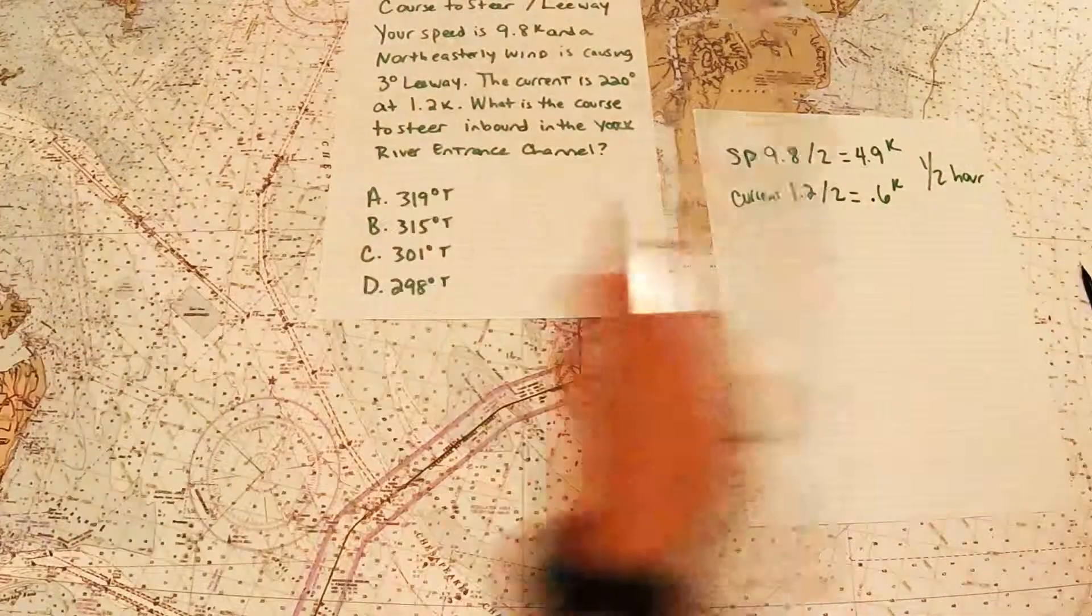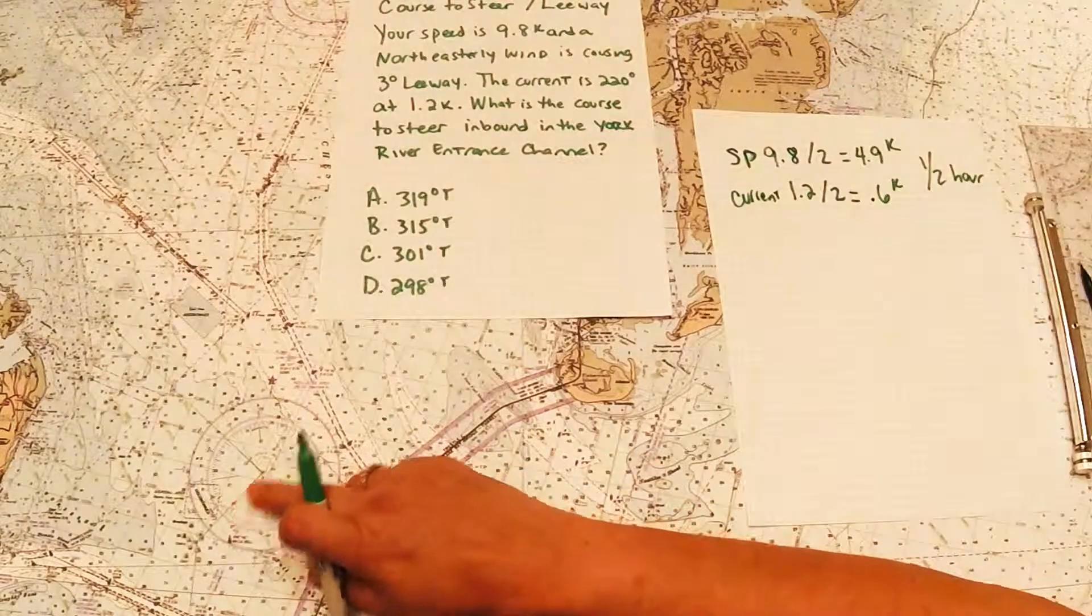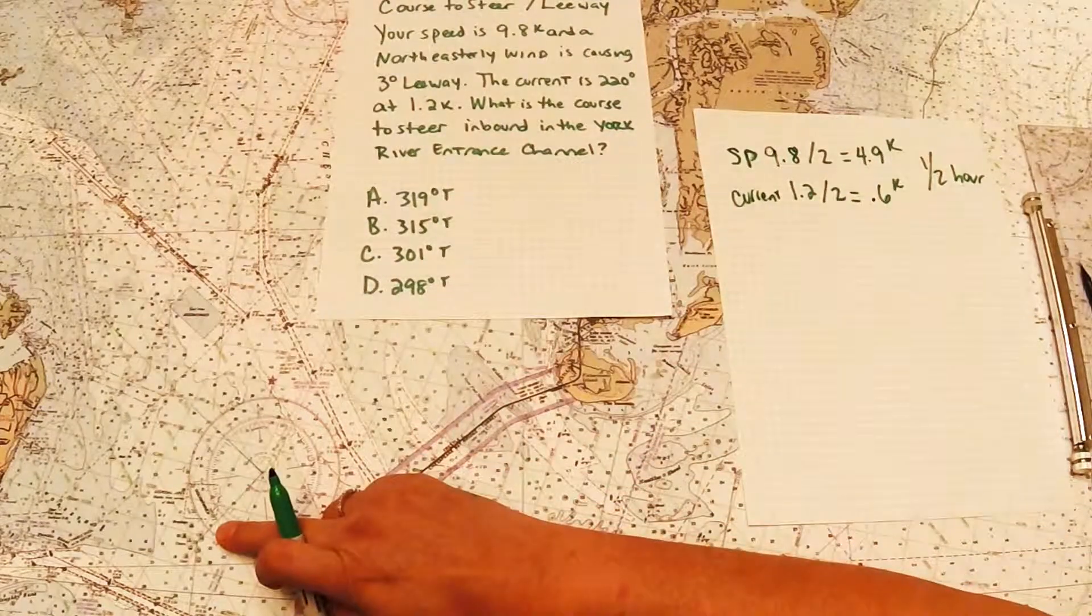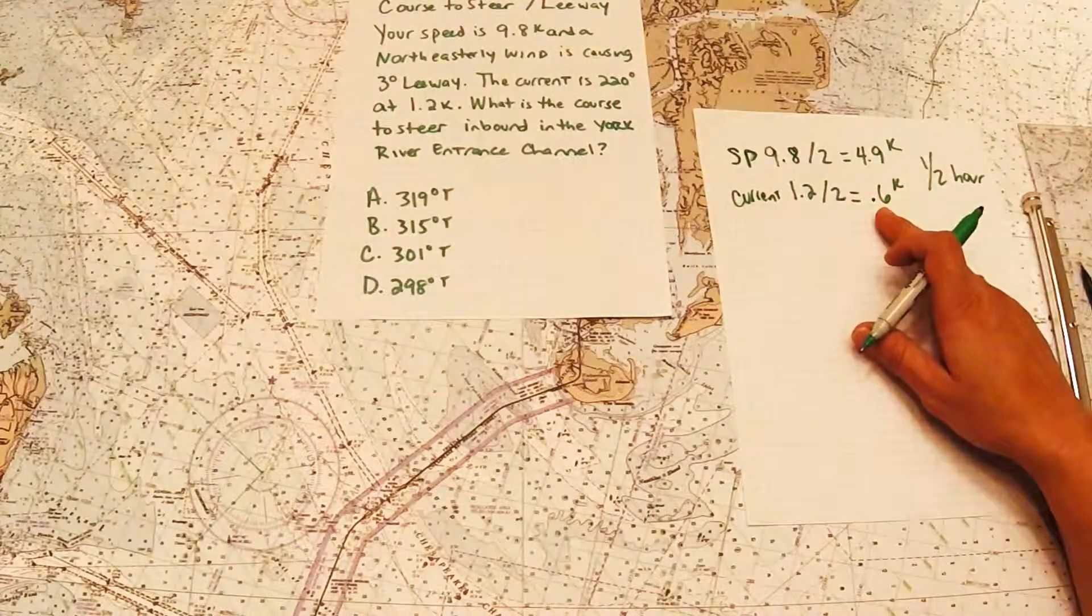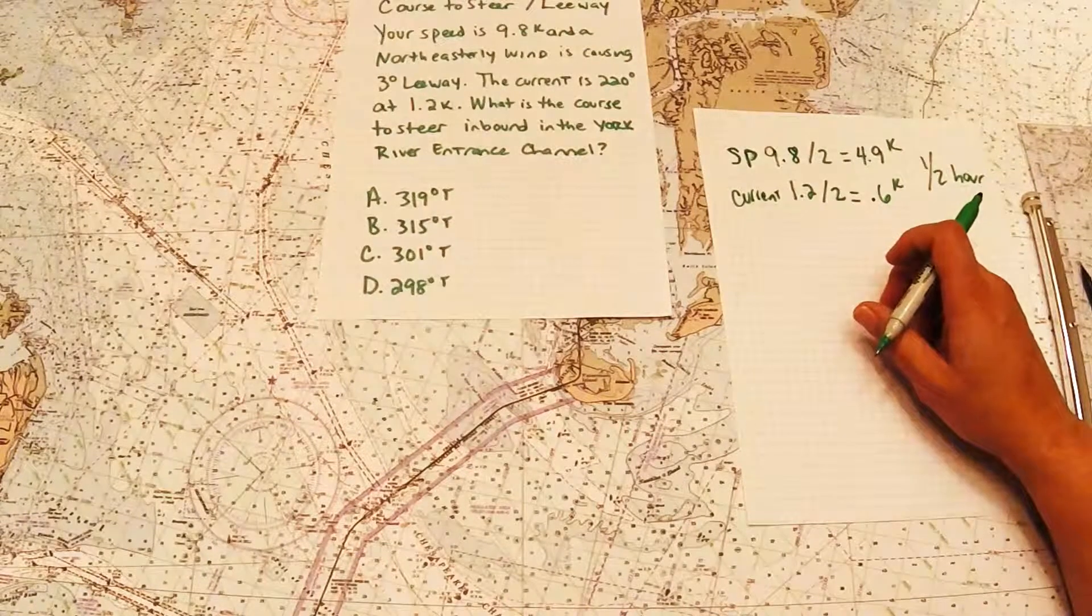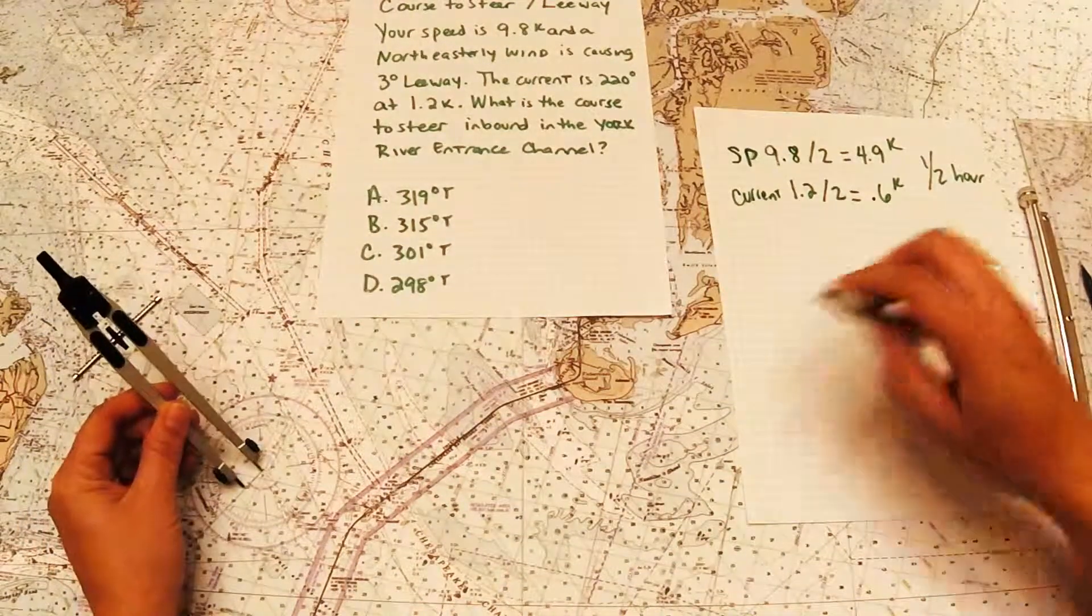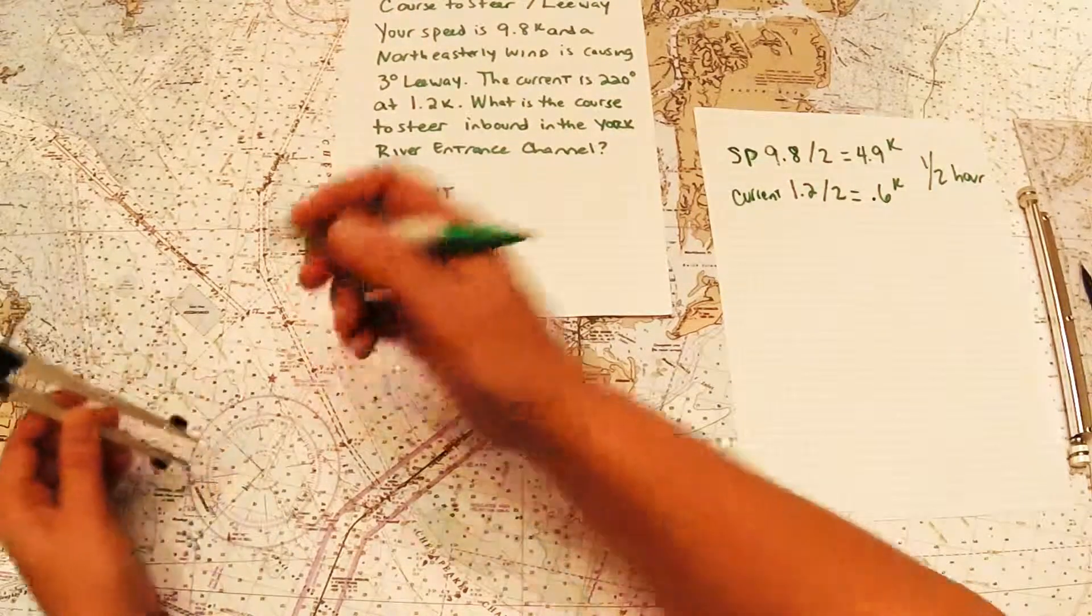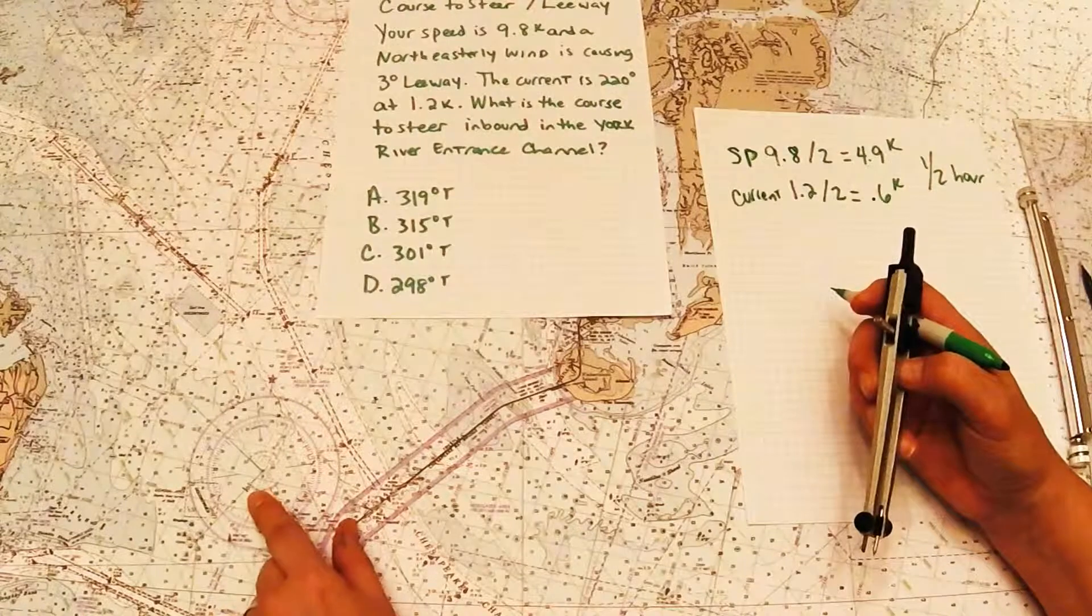So the first thing that we're going to do, once we've got our speeds broken down in half, we're going to plot our current drift line, which was 0.6. So we know the set was 220, our drift at a half hour is 0.6. So we're just going to go over here to the latitude scale, and I'm going to measure 0.6 on the latitude scale. So I'm just measuring out 0.6 of a mile. Now I take that 0.6 onto my current line, and I'm going to make a mark there. So if I did nothing, I would be there in a half hour. The current's pushing me down at 0.6 knots, so I would be there in a half hour.